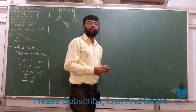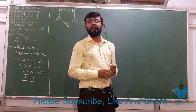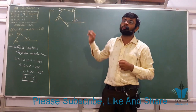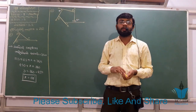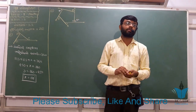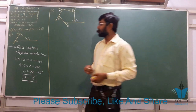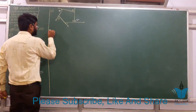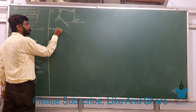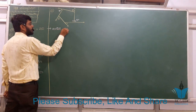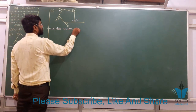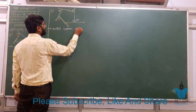બહિષ્કોણ છે જેનો સરવાળો 360° હશે. આપણે બહિષ્કોણના ખૂણાનો સરવાળો 360° લખીએ. આ સૂત્ર ઉપયોગ કરી શકીએ. આપેલી આકૃતિમાં 22 કોણના માત્રાનો સરવાળો.